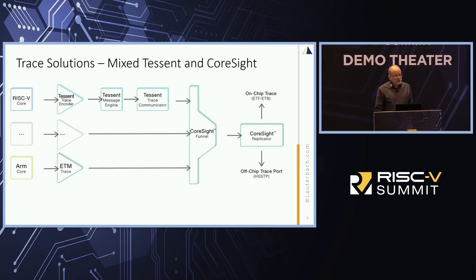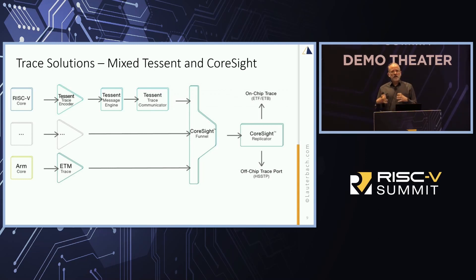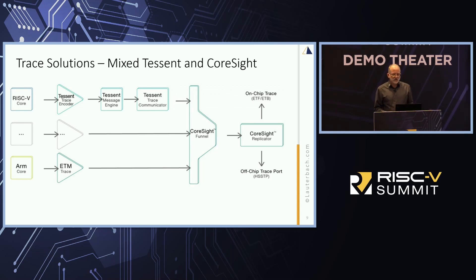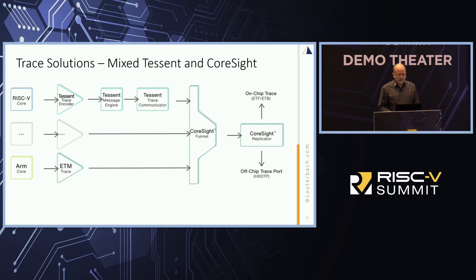If you have the Tessence solution, we can do the same — where if you have it mixed, you can have the Tessence and eventually feed into that Coresight funnel, bringing it out onto the system. This slide shows either on-chip or serial, but if you have a TPIU you can come out that TPIU as well.